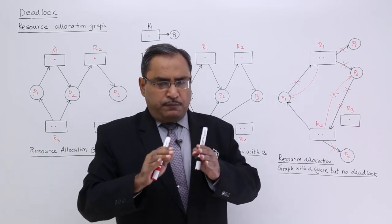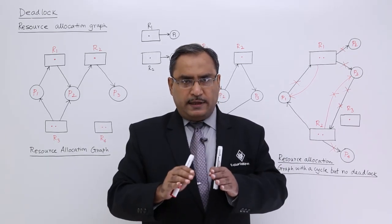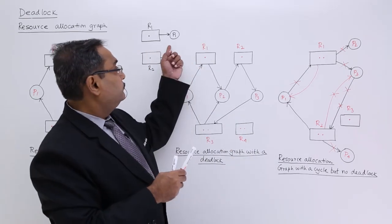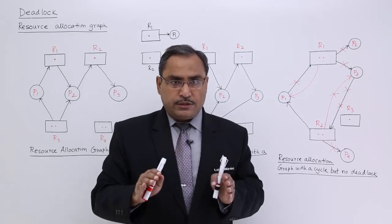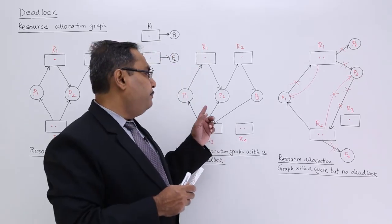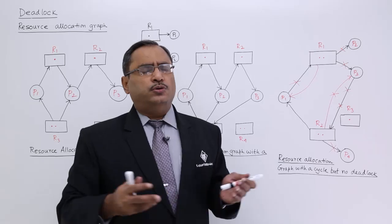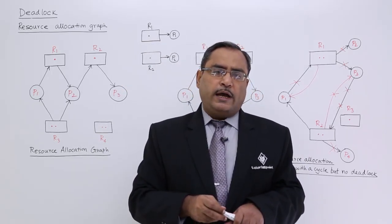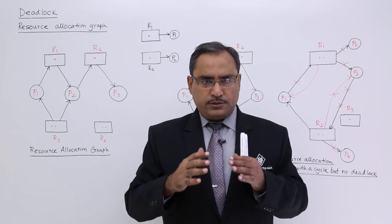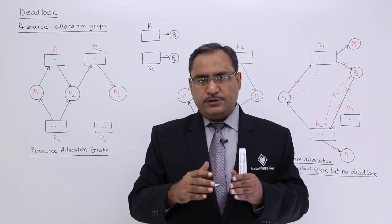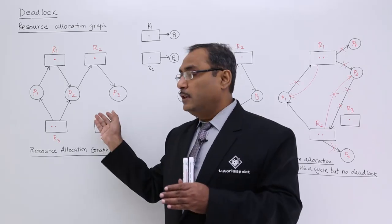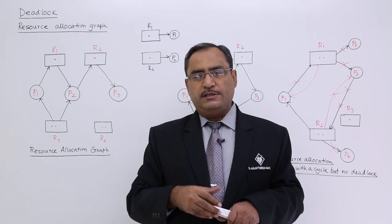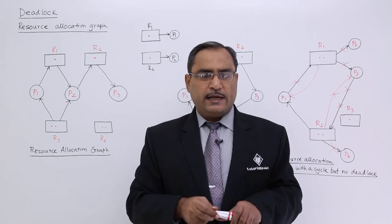To conclude: if a resource allocation graph has no cycle, then deadlock will not take place. If a resource allocation graph has a cycle, then deadlock may or may not take place. These are the inferences we can draw from a resource allocation graph to determine the current deadlock situation. For other topics on deadlock, please watch the next videos. Thanks for watching.